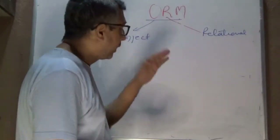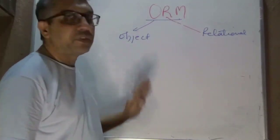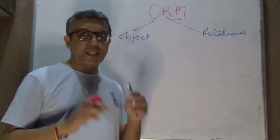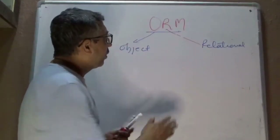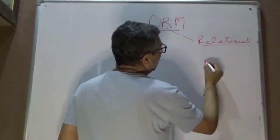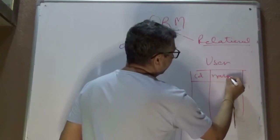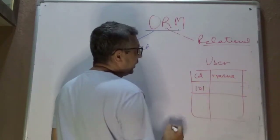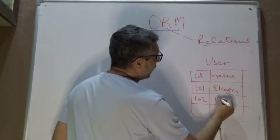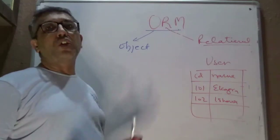Let's take a simple example to understand this notion of mapping. On the relational side, we have a table 'user' with two columns — ID and name — and two rows: 101 (Ekagra) and 102 (Ishna). The question is how you would want to deal with this data on the object side of things.